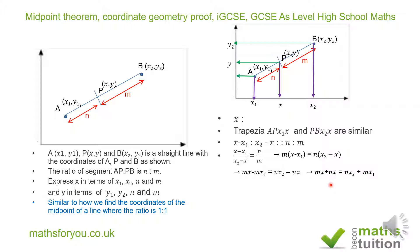If we now factorize the left hand side, we end up with x into m plus n is equal to nx sub 2 plus mx sub 1. If we now divide both sides by m plus n, we end up with x is equal to nx sub 2 plus mx sub 1 divided by m plus n.